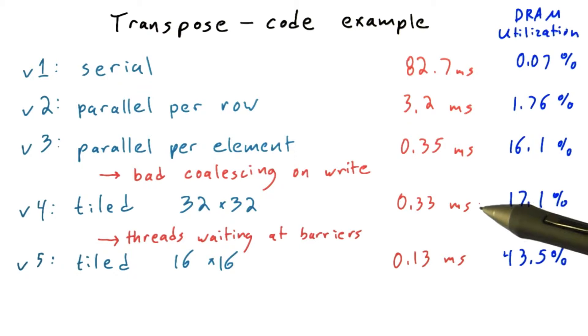By tiling that code, we improve on this a little bit, but we're still spending a lot of time waiting at barriers. By going to a smaller tile size, we can get that down to 0.13 milliseconds. At this point, we're getting about 43.5% of the theoretical peak limit of our bandwidth, which is actually pretty good.